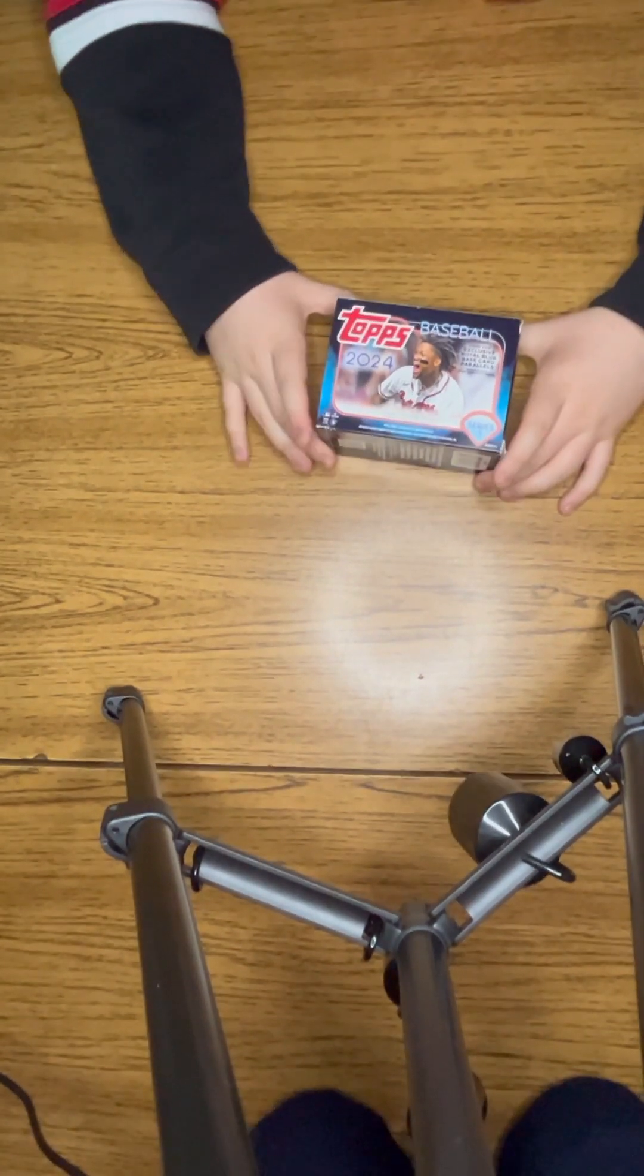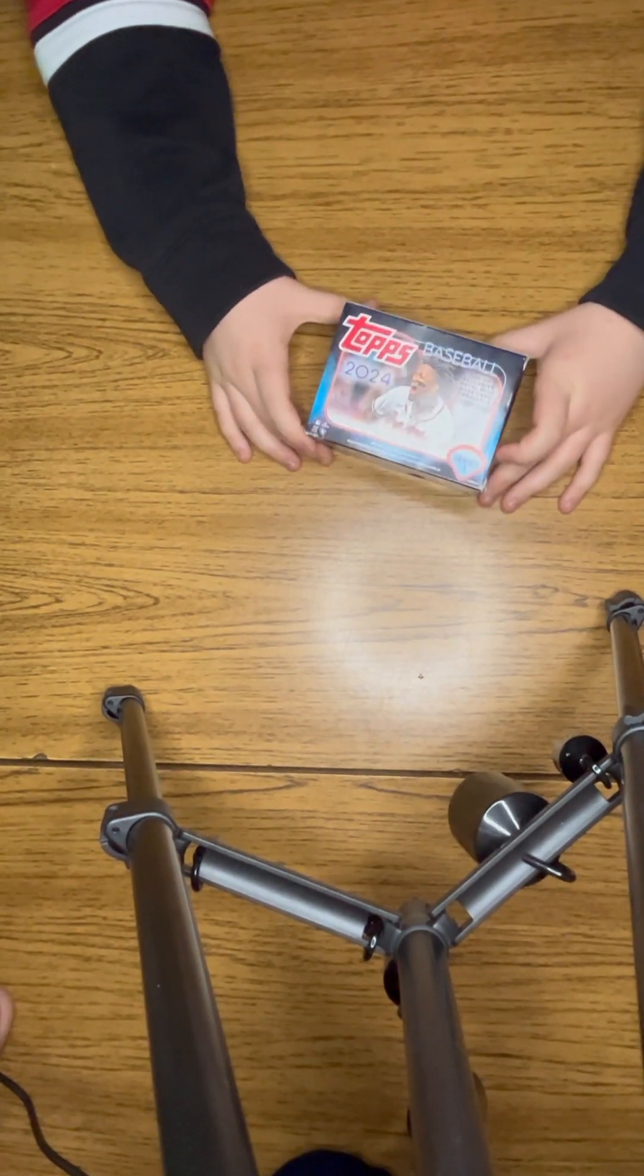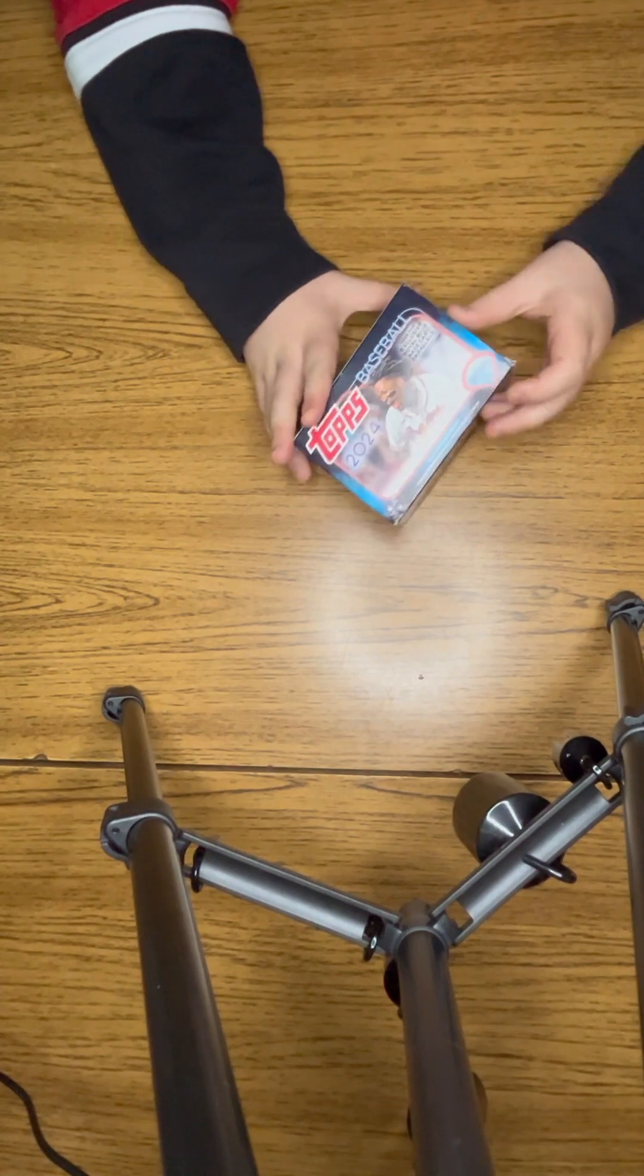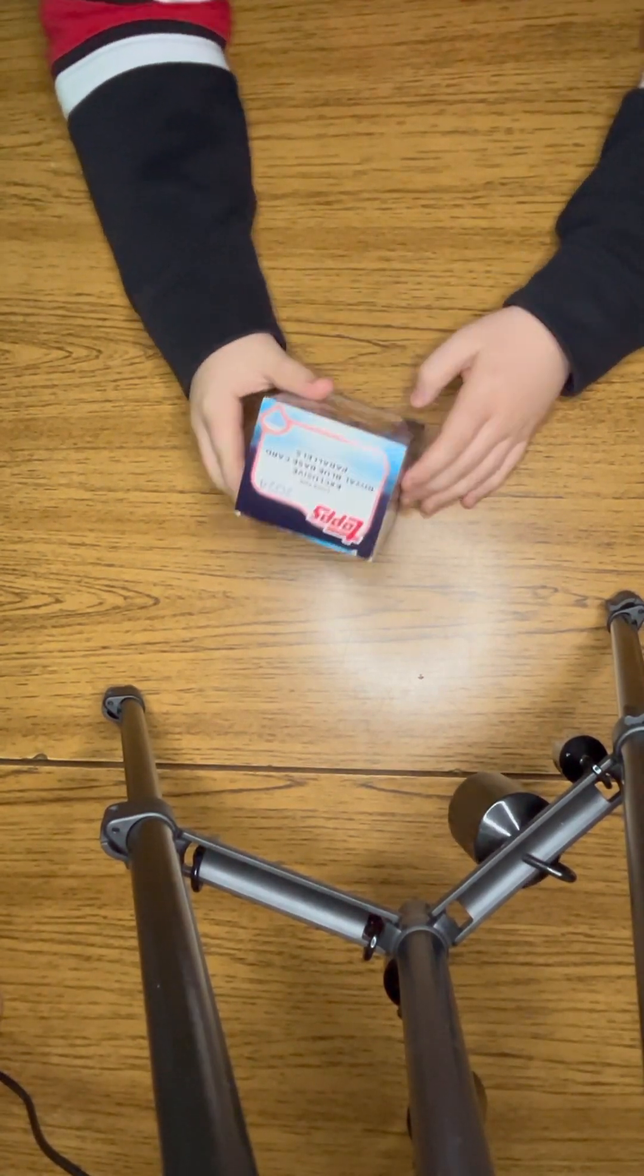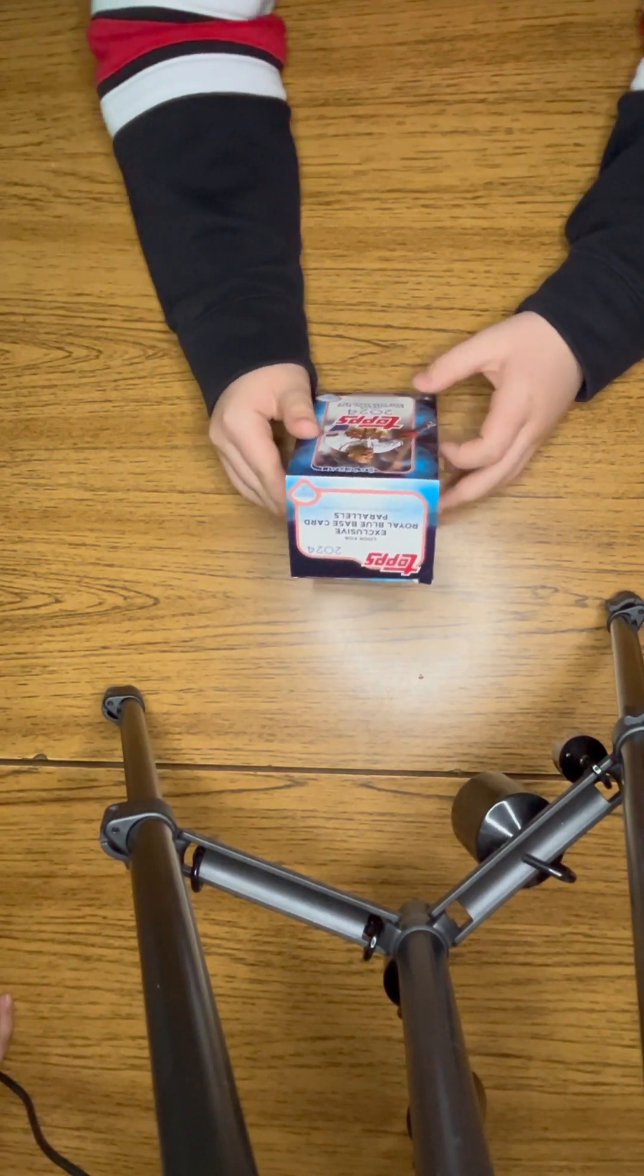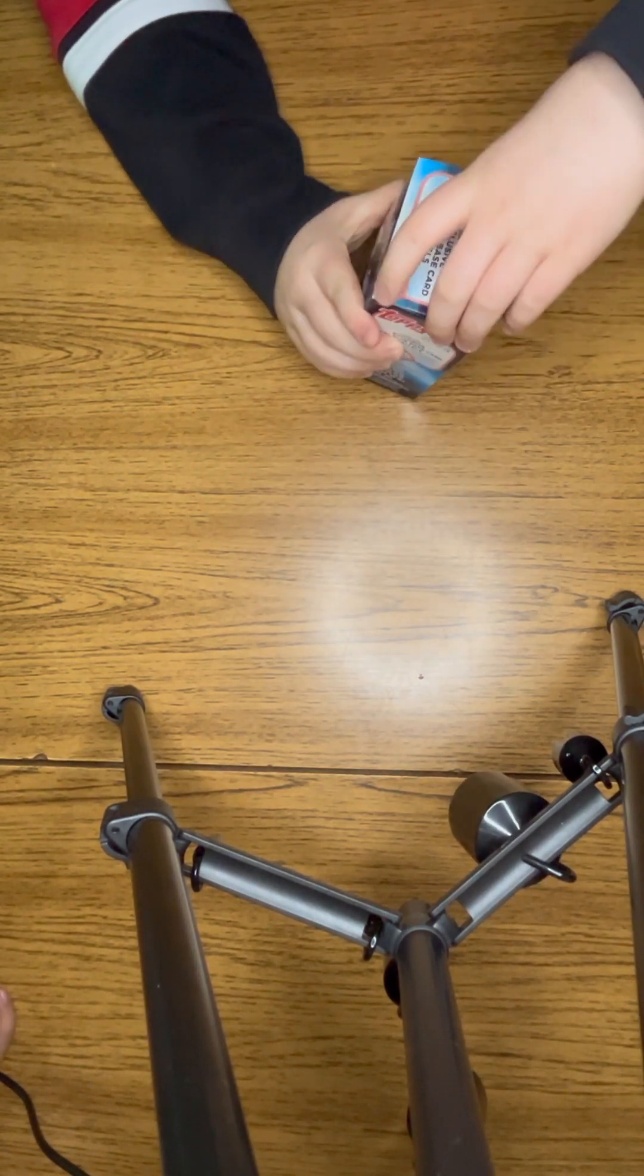What's up guys, welcome back to another video of the Sports Card Collectors Club. Today we are opening a Topps 2024 baseball box. There are seven packs and twelve cards in each pack. We are looking for the exclusive royal blue base card parallels. Let's get into it.